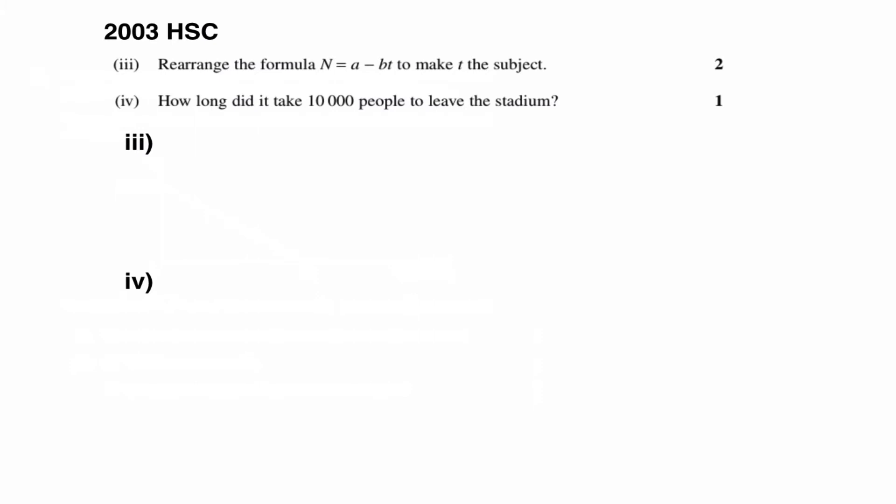Okay, this question continues. First of all, it says rearrange the formula n equals a minus bt to make t the subject. Now, a common error would have been to use the values of a and b you calculated previously, but this wants you to do it without substituting those values in. So if we've got n equals a minus bt, if we add bt to the left-hand side and subtract n from both sides, we can get that bt is a minus n. Then dividing both sides by b, we get an expression t is equal to a minus n on b.